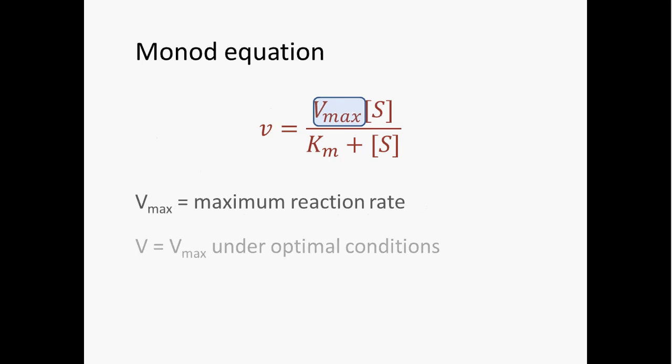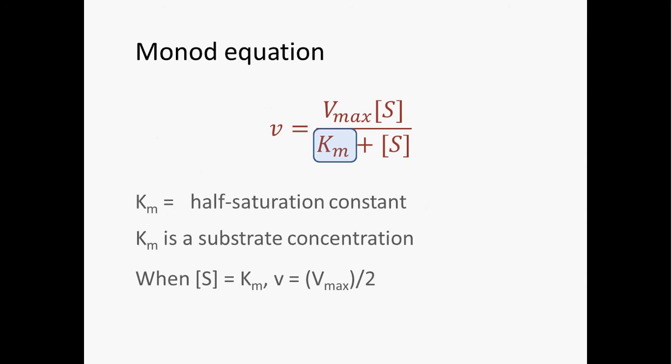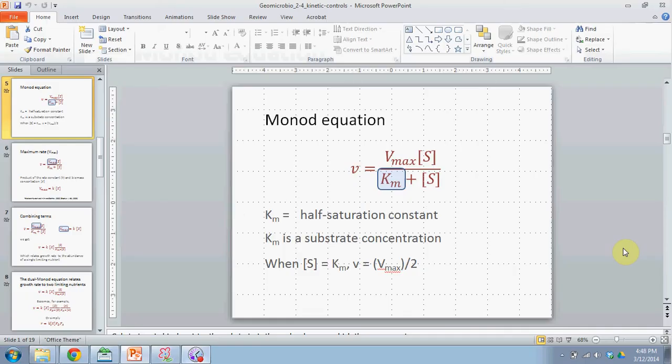Vmax is the maximum rate that the reaction can achieve — the rate under optimal conditions — and that relates to temperature, pH, but also the abundance of substrate. Under optimal conditions, the enzyme has plenty of substrate to react with. Km is referred to as the half-saturation constant. Km is itself a substrate concentration — specifically, the substrate concentration at which the rate of the reaction is one-half of its maximum rate.